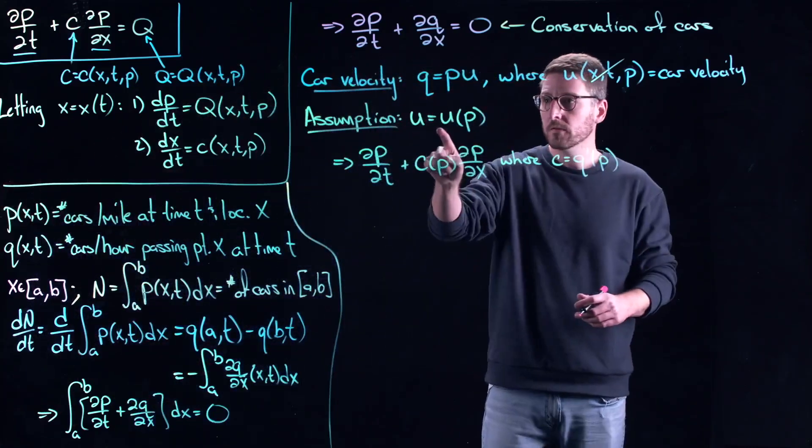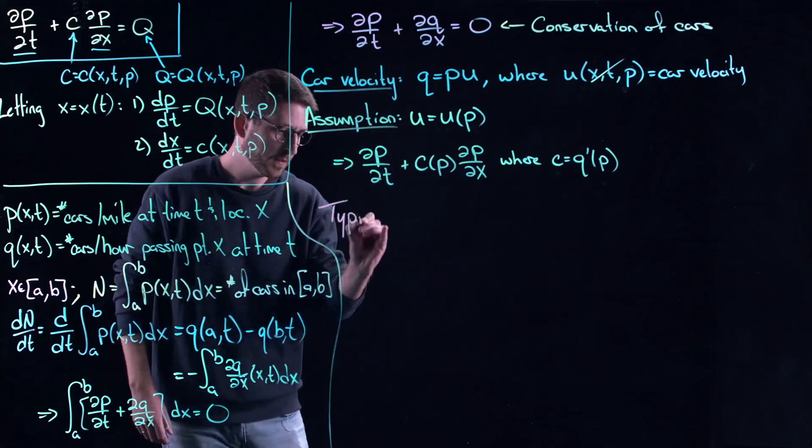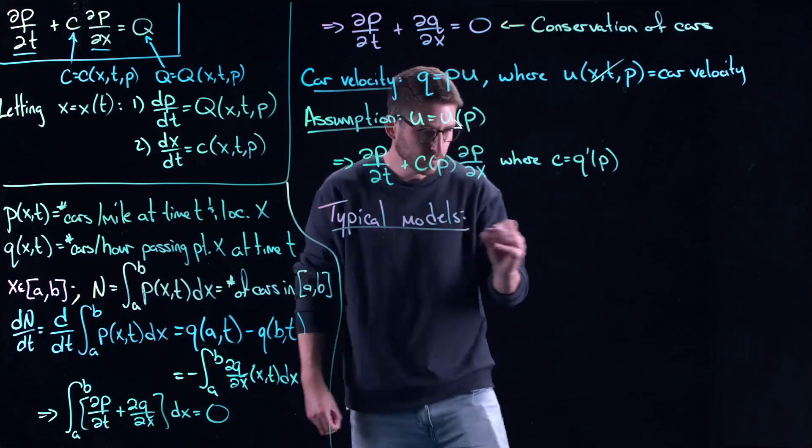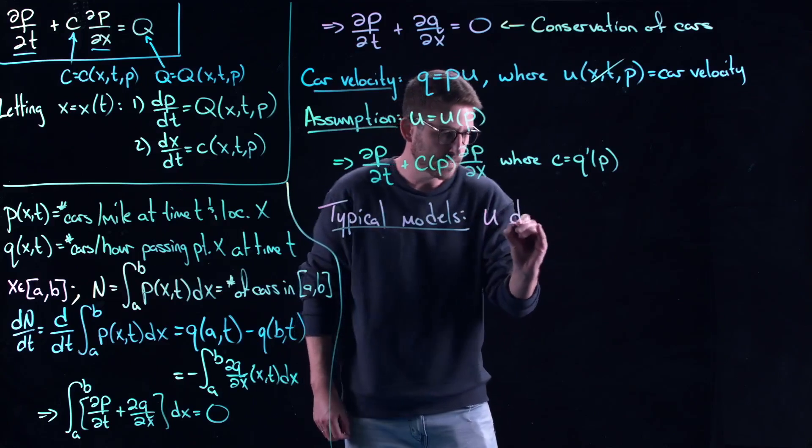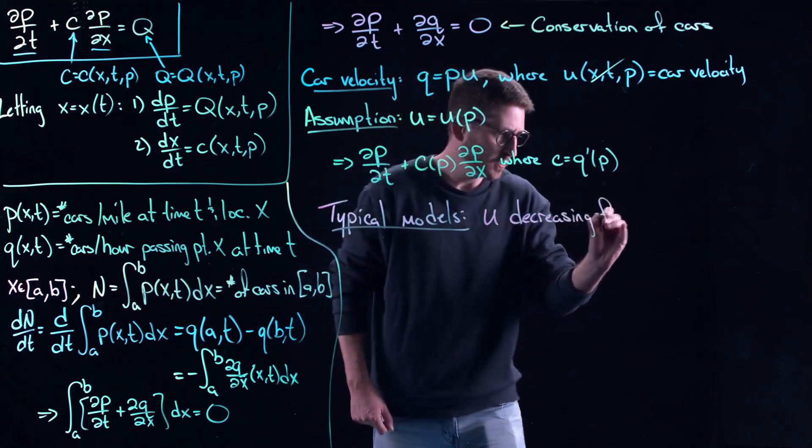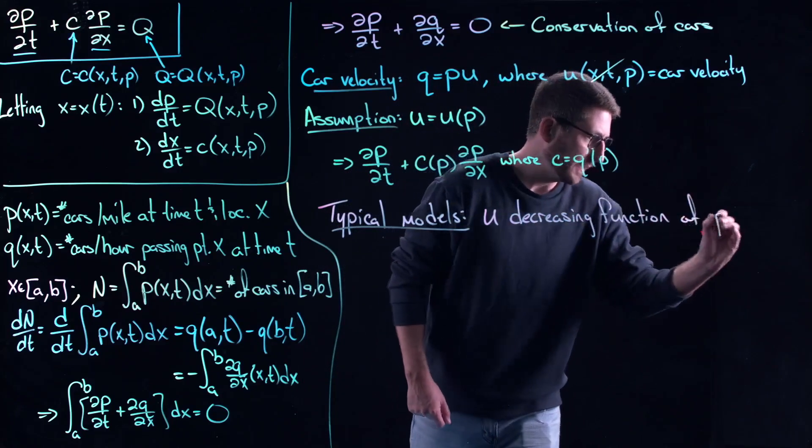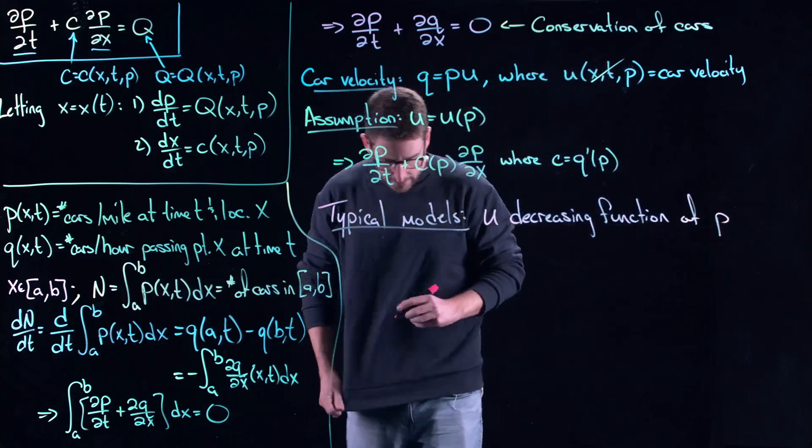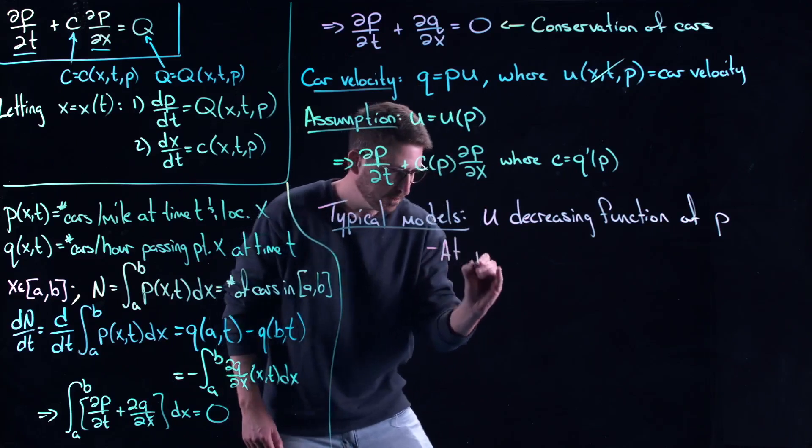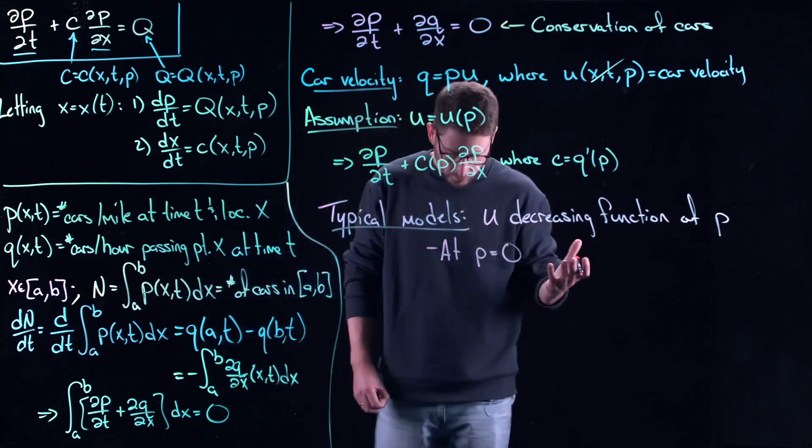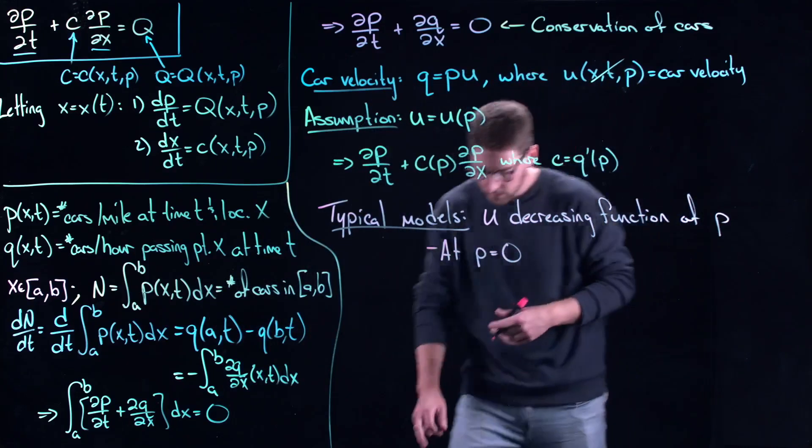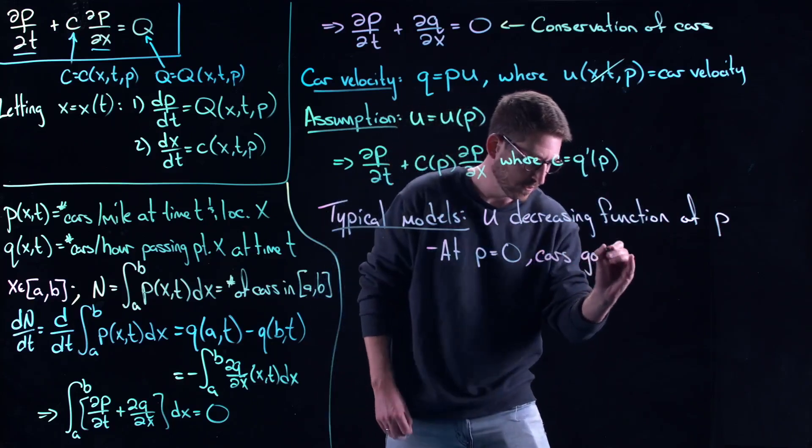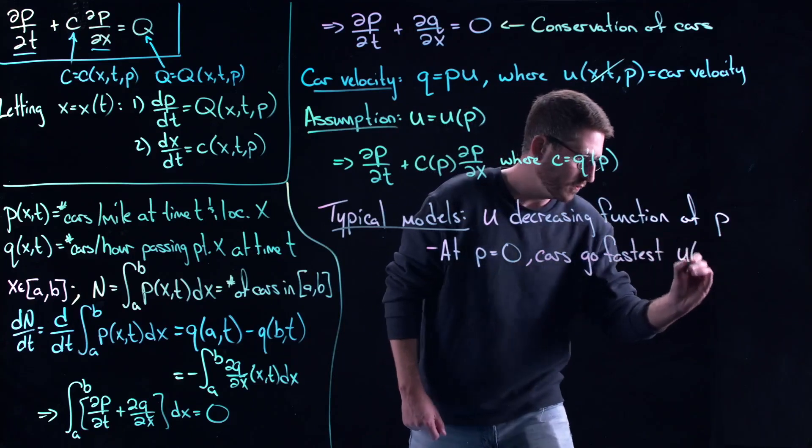So let's go back to this, what would be the typical sort of functions that you would see? For typical models, we would expect that u is a decreasing function of p. As density goes up, velocity goes down. More cars on the highway, slower average speeds. And similarly, at p equal to zero, nobody's on the highway, or at least there's sort of no density. You've got one car just zipping down the highway. Then cars go the fastest at some maximal velocity, which we'll call u of zero, u max. So we're not going to assume people are speeding in our model here.